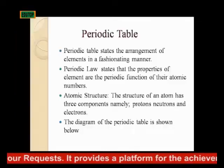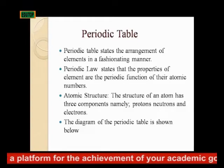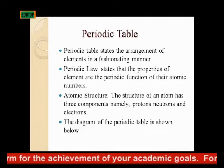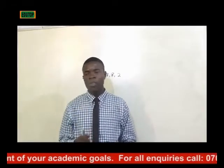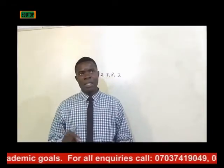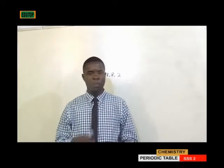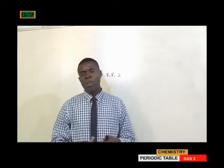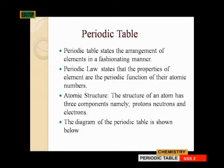Atomic structure: the structure of an atom has 3 components — protons, neutrons, and electrons. Protons and neutrons reside in the nucleus, while electrons revolve around the nucleus. The electron is negatively charged, while the nucleus is positively charged because it contains protons. Since neutrons have no charge, the charge inside the nucleus is assumed to be that of the protons, which is positive.